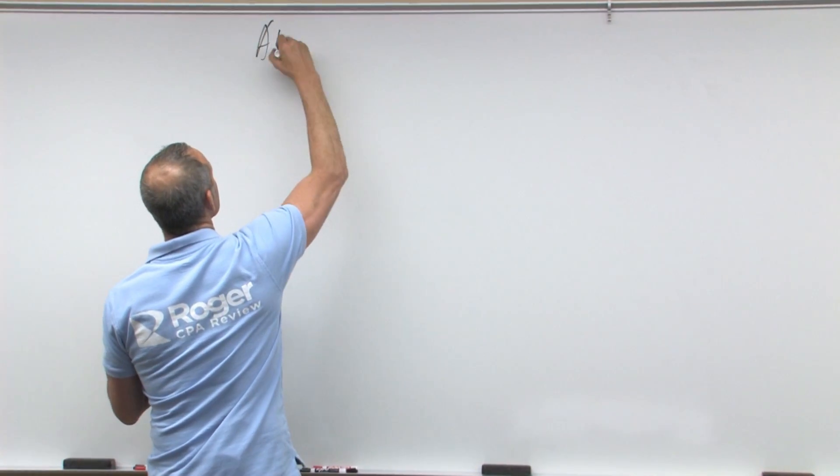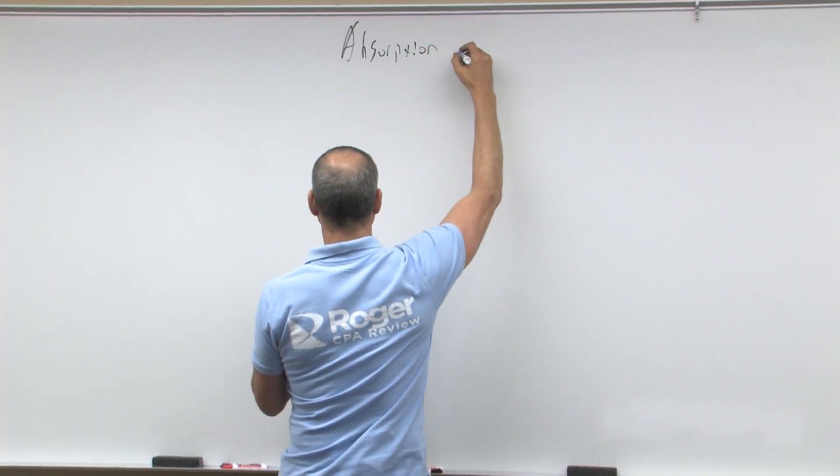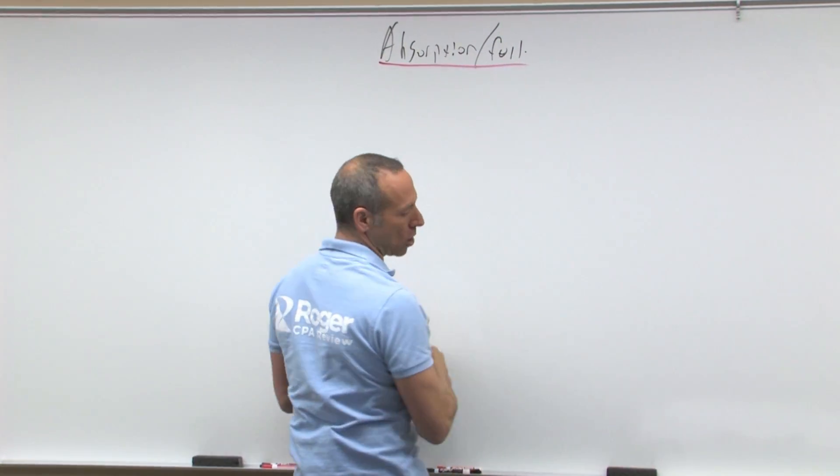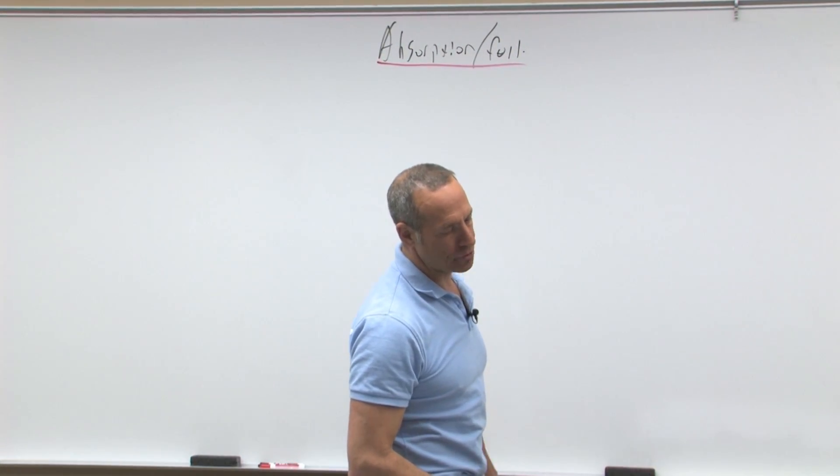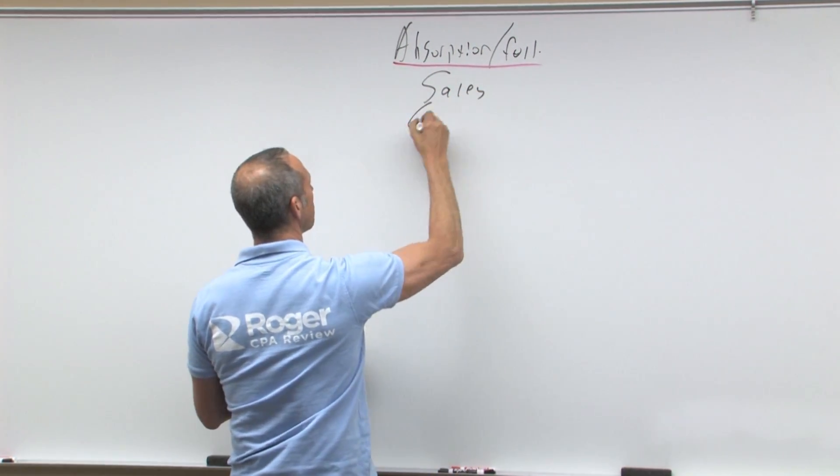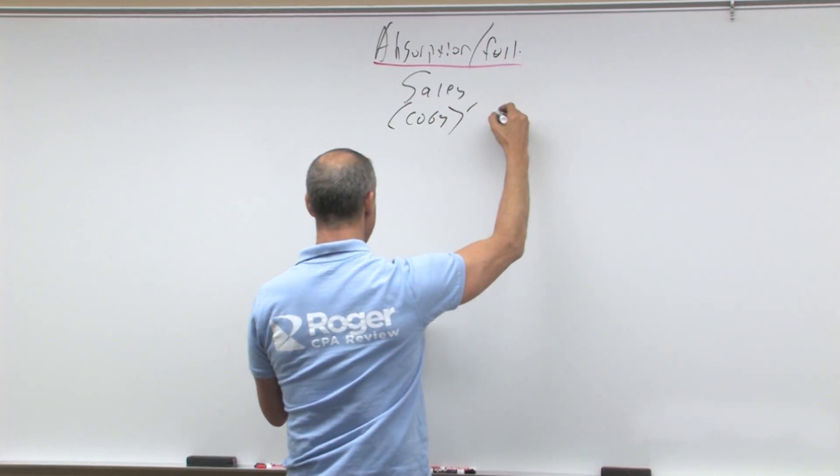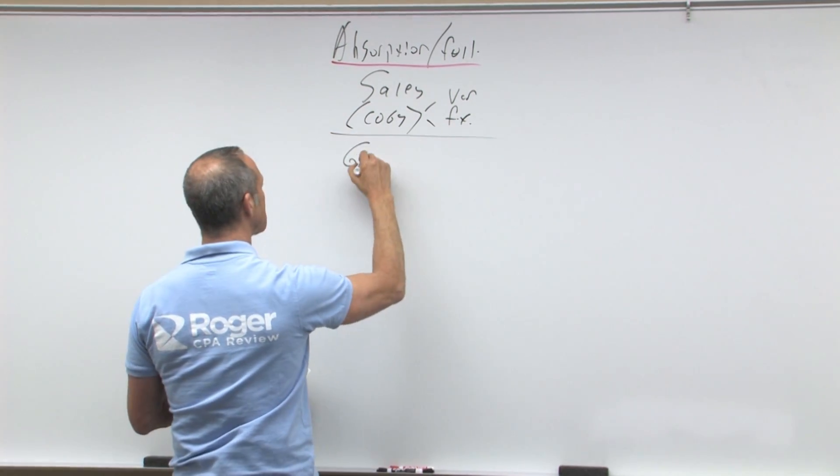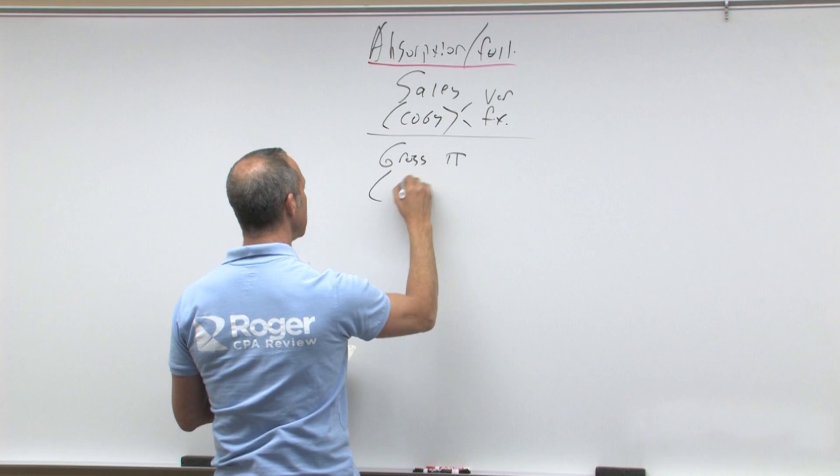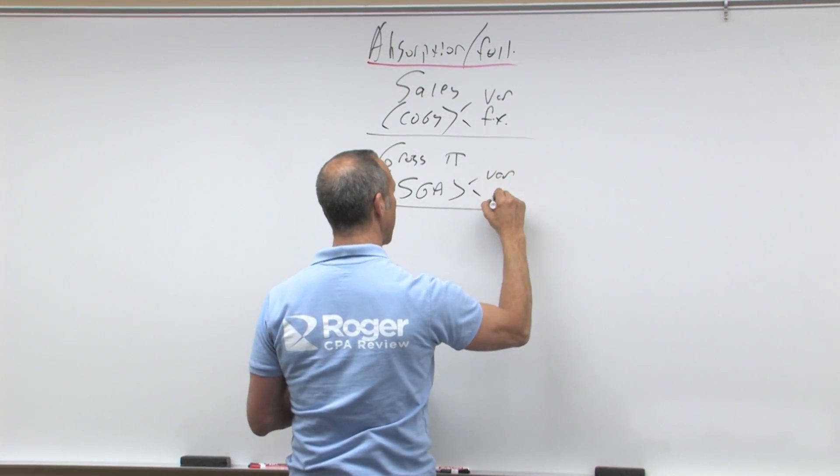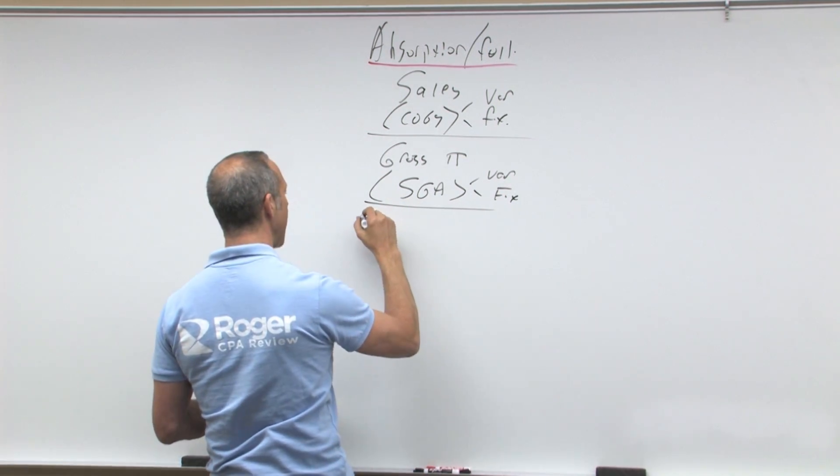So let's set up what our income statements look like. Here I'll put absorption, and this is called absorption costing or full costing. And then over here we'll do variable costing. Now under your absorption or your full costing, this is going to be your sales minus cost of goods sold. But cost of goods sold are going to be both your variable cost of goods sold and your fixed. That equals your gross profit minus SG&A, selling general administrative. Those are going to be both variable and fixed equals your pre-tax operating income.